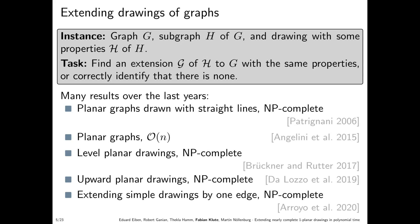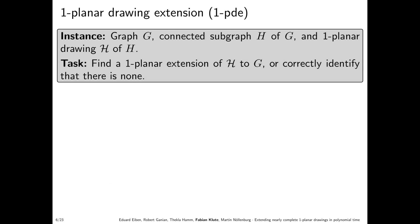What exists in the literature regarding extension problems? For planar graph drawings with straight lines, it was shown in 2006 by Patrignani that extending is NP-complete. Without the straight-line condition it is solvable in linear time. Level-planar and upward-planar drawings turned out to be NP-complete as well, in 2017 by Brückner and Rutter and in 2019 by Dalozzo et al. Recently, Arroyo et al. proved that extending simple drawings even with one edge is also NP-complete.